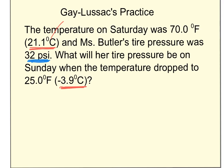First thing — I see Celsius, so we have to convert to Kelvin. 21.1 degrees Celsius plus 273 gives me 294.1 Kelvin, and negative 3.9 plus 273 gives me 269.1 Kelvin.